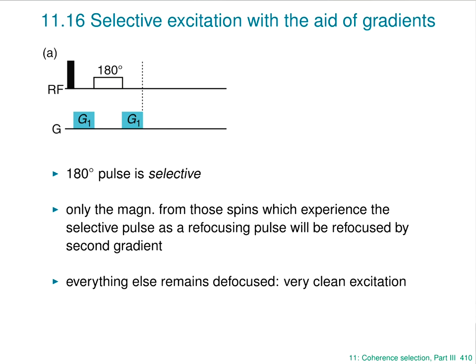All of the other spins which don't experience the 180 degree pulse will be dephased by both gradients. The result is very clean selective excitation: those spins which experience the 180 degree pulse are excited and appear in the spectrum, and everything else is dephased.